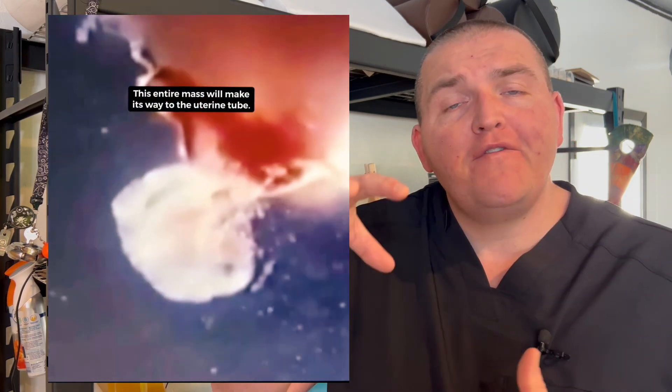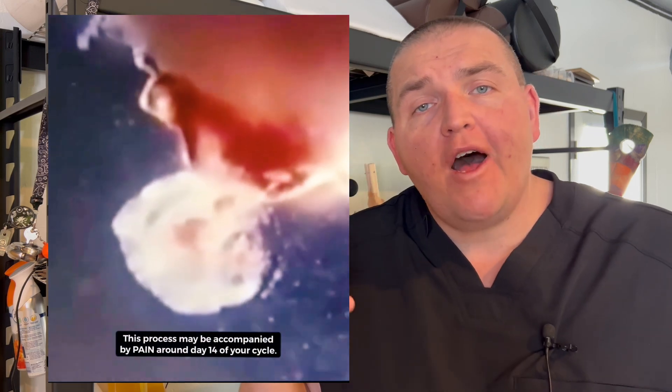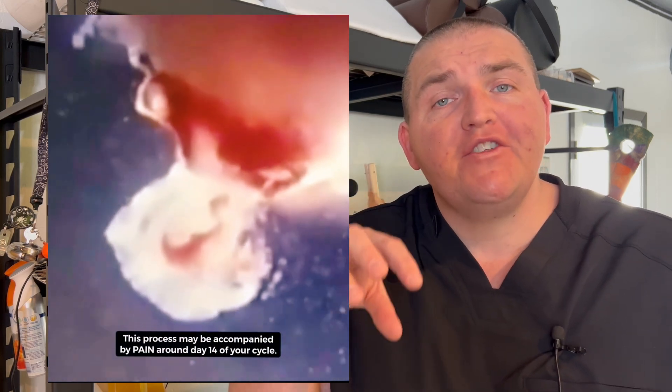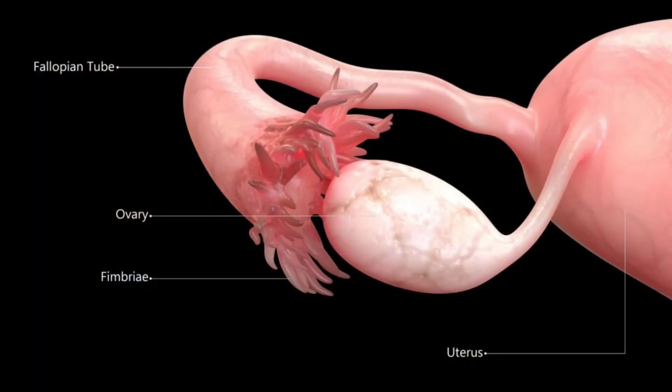Once the egg is kind of hanging out off of the ovary, it is now the job of the fimbriae — the little finger-like projections at the end of the uterine tube — to sweep over this area, pick that egg cell up, and bring it into the uterine tube.